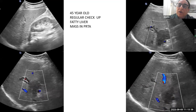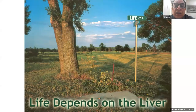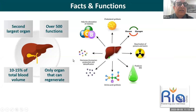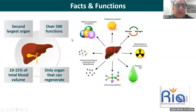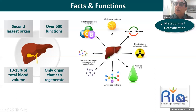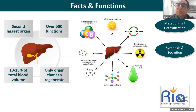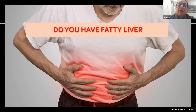Life depends on the liver. It is the second largest organ in the body, contains about 10 to 15 percent of the total blood volume at any point in time, and almost the entire blood circulates through it. It has over 500 functions and is the only organ that can regenerate. It helps in all complex metabolism and detoxification mechanisms, synthesizes and secretes bile, and is a storehouse for glucose and energy.